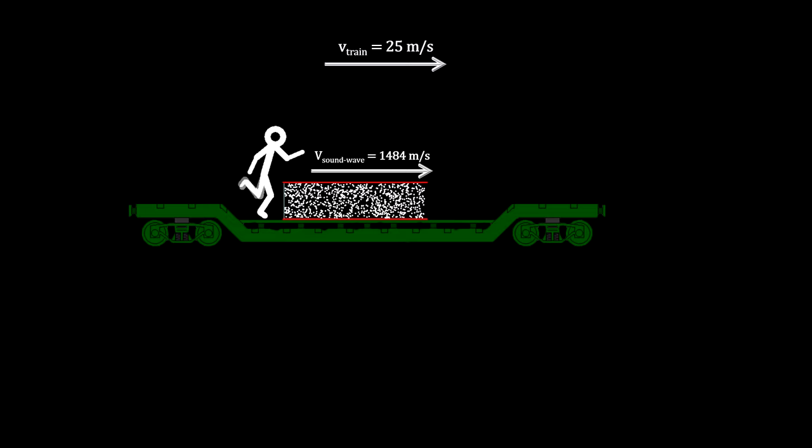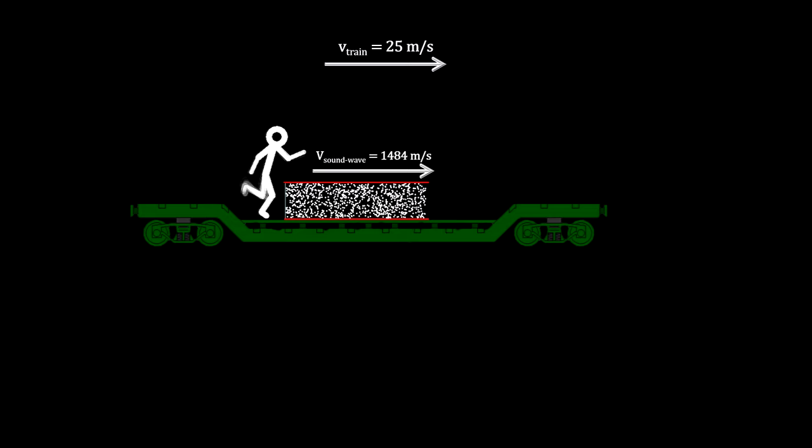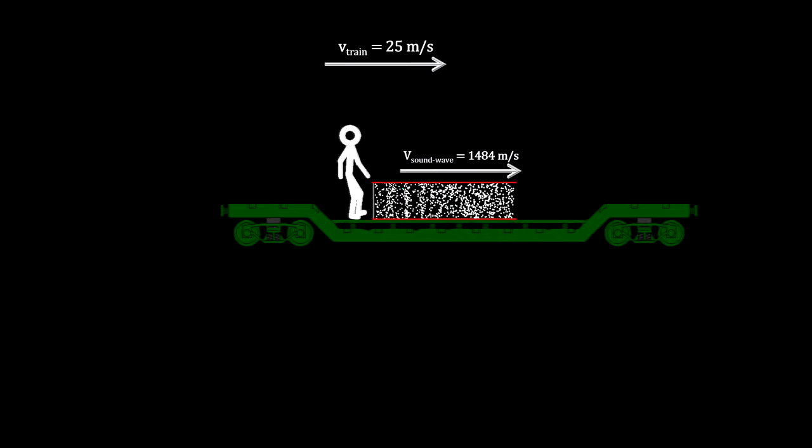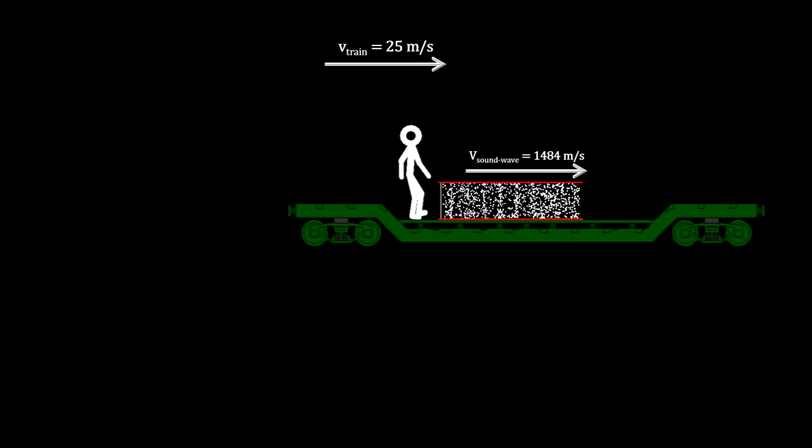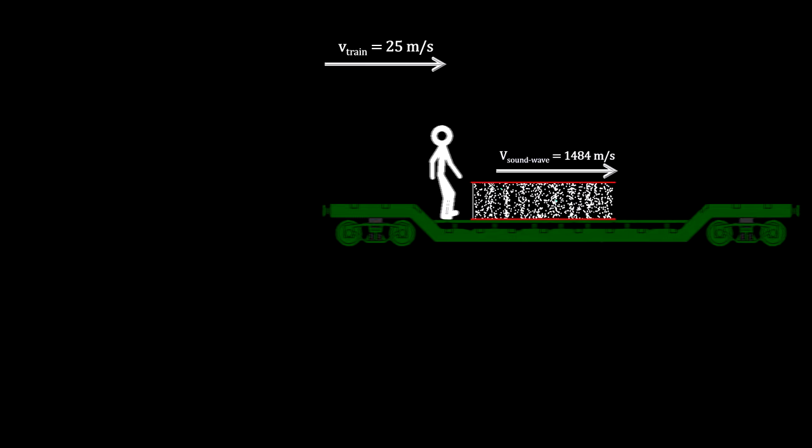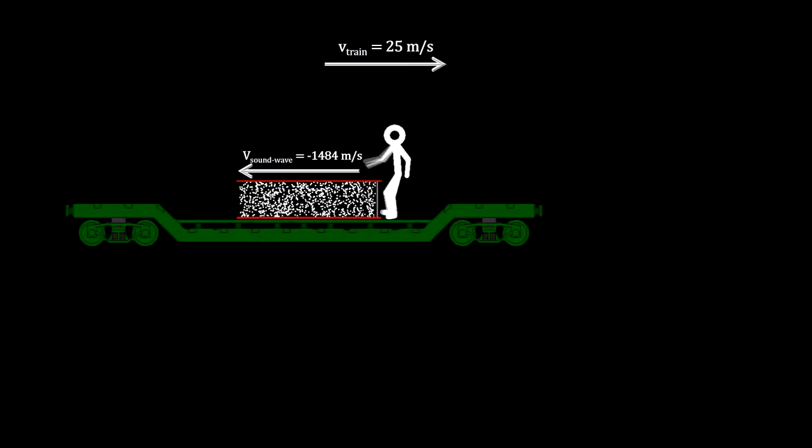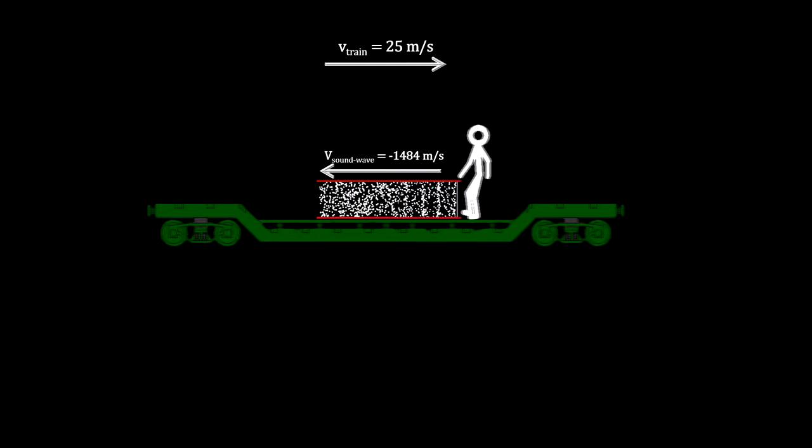Here's another example that illustrates that it doesn't matter what is moving. Suppose the person on the train kicks a water container, initiating a sound wave in the water moving in the direction of the train. He would measure the speed of sound in water as being the same when he kicks it forward and when he kicks it backward.